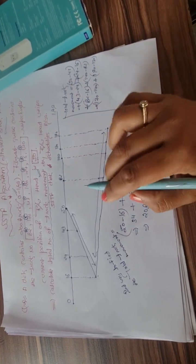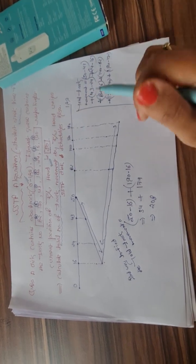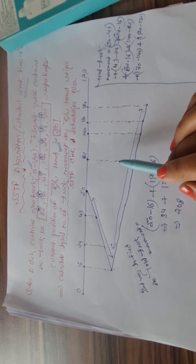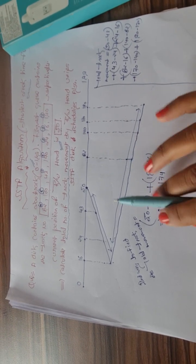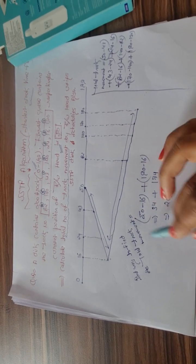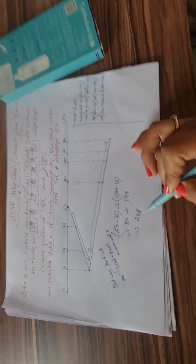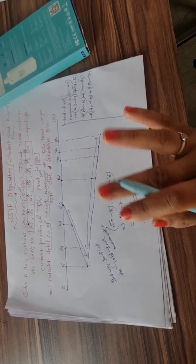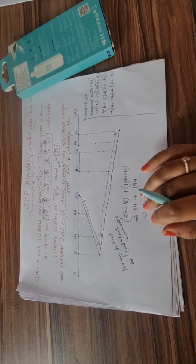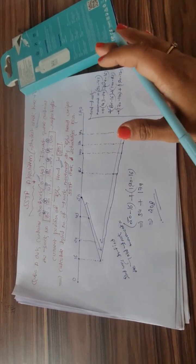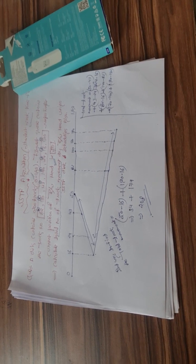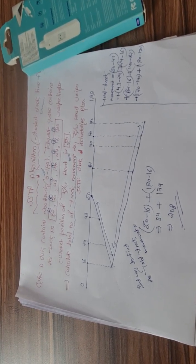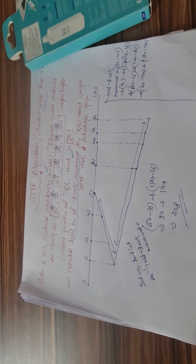Comparing with FCFS, the FCFS algorithm gave around 642 total track movements, while SSTF gives only 208 — showing significantly better performance. However, SSTF has the problem of starvation. In the next video, we'll look at the SCAN algorithm. Hope this is clear to everyone — thank you!